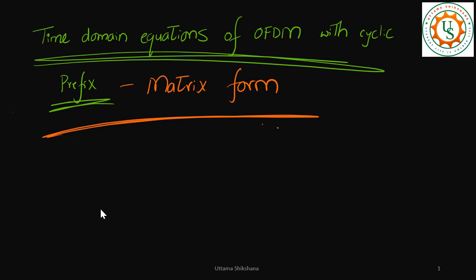Hey guys, welcome back. In the previous video I was talking about the time domain equations of OFDM with cyclic prefix. We saw how to write these equations in the case of a wireless frequency selective channel, and with cyclic prefix the equations are equivalent to the circular convolution of channel H and X. Taking the DFT, we get N parallel flat fading equations in the frequency domain.